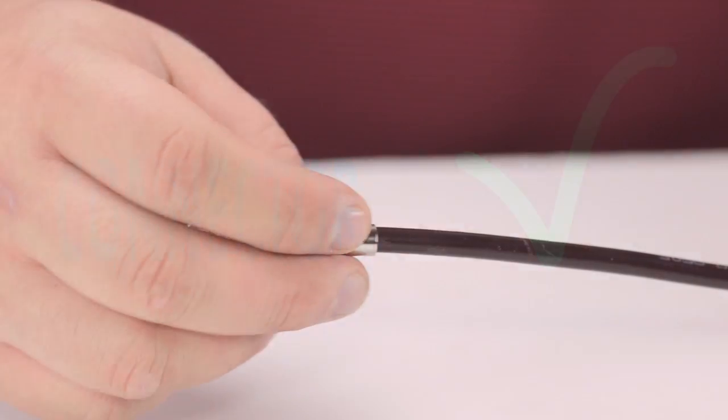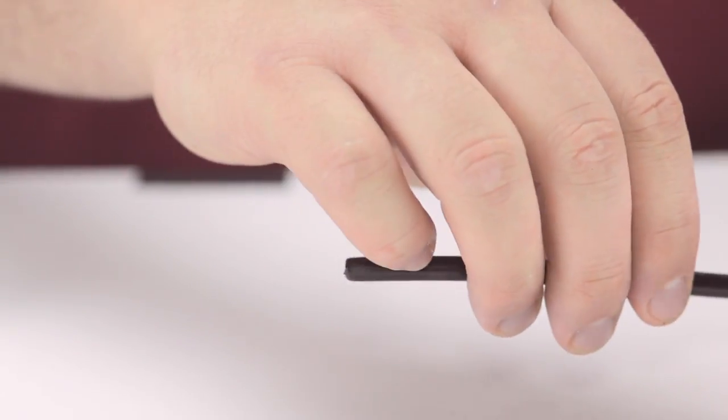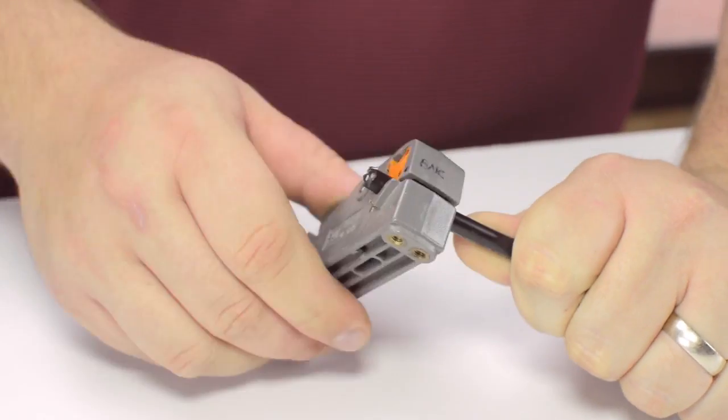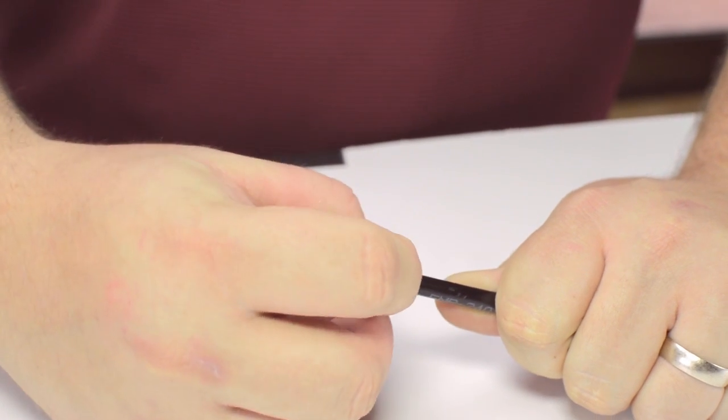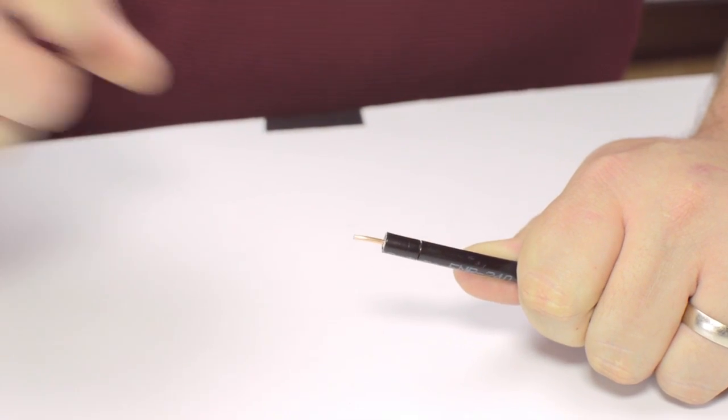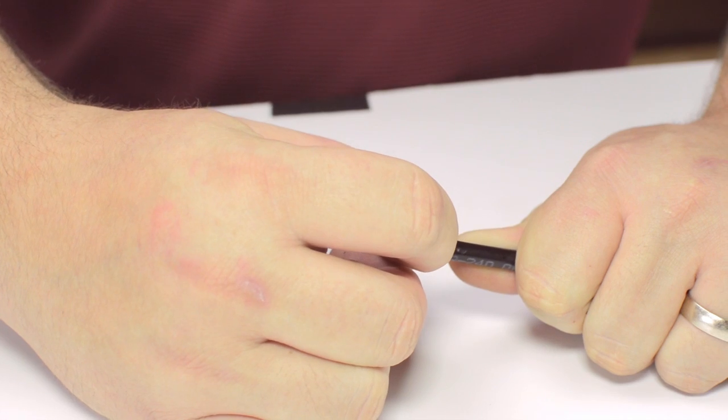Start by inserting the ferrule over the outer jacket of the cable. Then using your cable stripper, strip back the outer jacket and dielectric. The advantage of using a cable stripper is that it will strip back the jacket and dielectric at the same time.